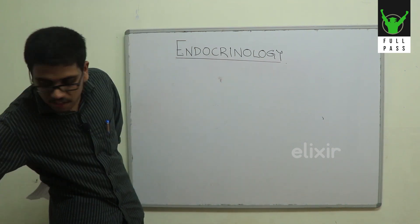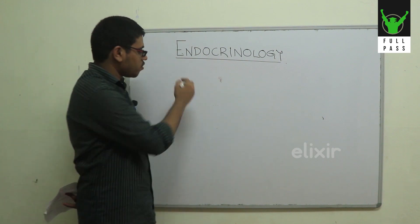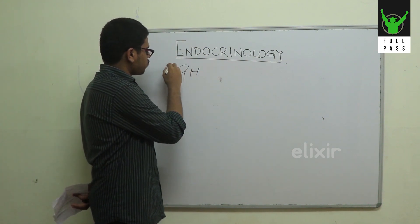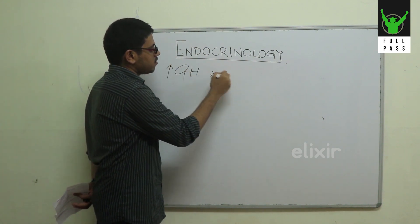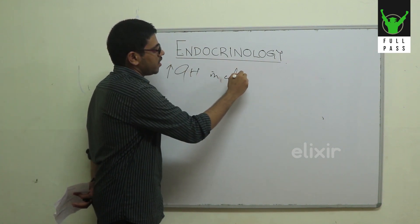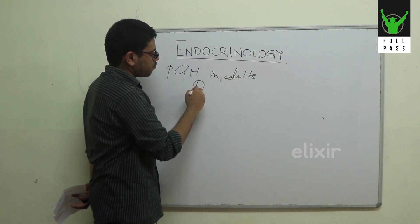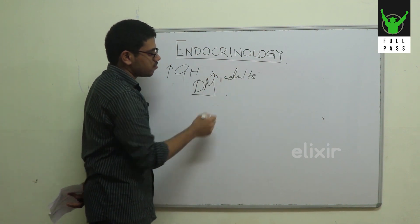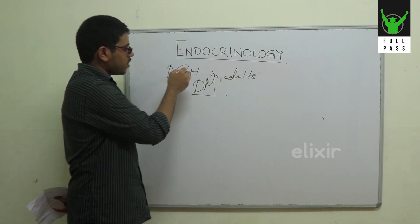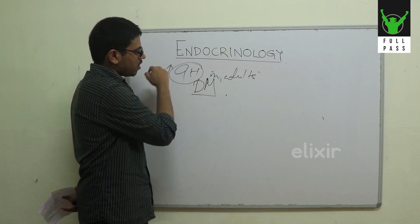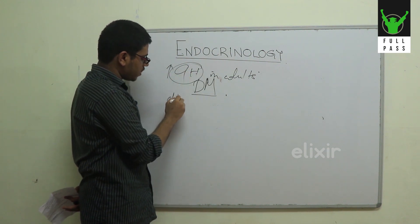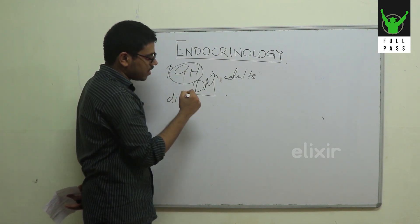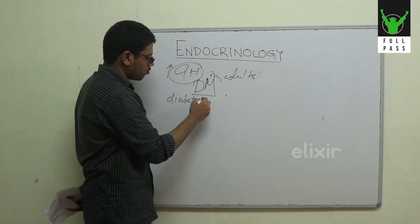What is Acromegaly? Acromegaly increases the secretion of growth hormone in adults. Acromegaly will predispose to diabetes mellitus. Growth hormone is called a Diabetogenic Hormone — that is, it increases the blood glucose level.